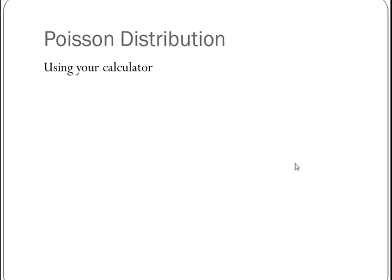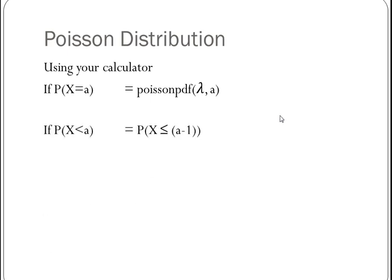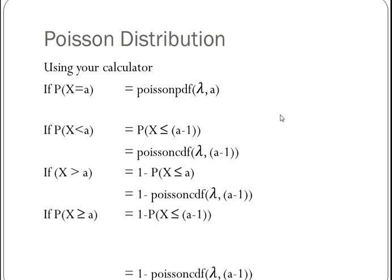The last thing we need to talk about is using your calculator. So if I am told that x equals a number, so x equals 5 or x equals 10, I'm going to do the Poisson PDF. My first variable, or my first part in my Poisson PDF is λ, and the second value is the one I want to find out. And much the same as when we did the binomial, all of these less than and greater than, you need to read through, and there's a sheet to help you understand those on the conference.